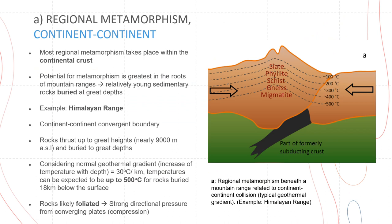Let us start by looking at the first example: regional metamorphism in a continent-continent boundary. You have directional pressure coming from both sides, which results in mountain building. Most metamorphism would take place within the continental crust, and the potential for metamorphism is greatest in the roots of mountain ranges where relatively young sedimentary rocks are buried at great depths.